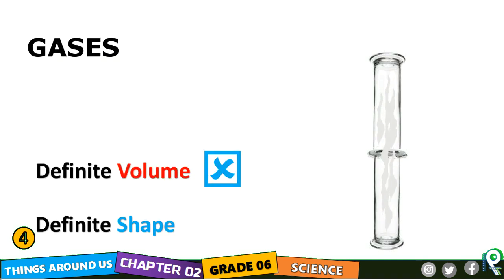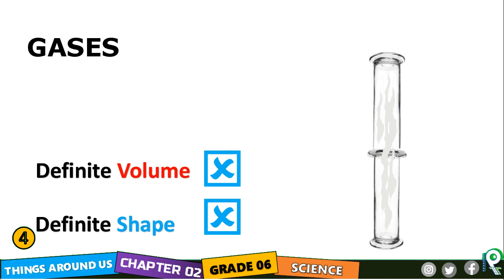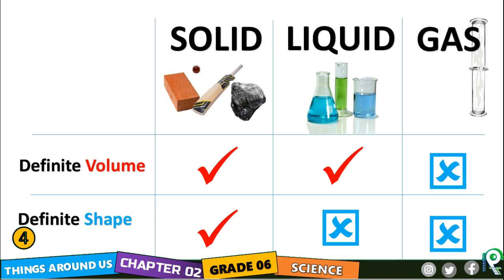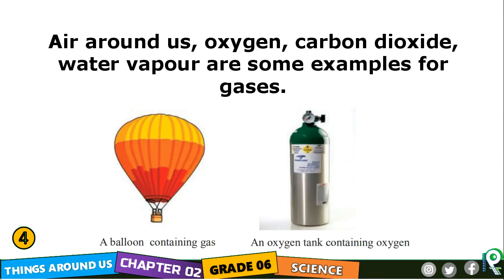The conclusion is that gases do not have a definite volume — they spread throughout the container. Therefore, gas has no definite volume and no definite shape. So to summarize: solid has definite volume and definite shape; liquid has definite volume but no definite shape; gas has no definite shape and no definite volume. Air around us, oxygen, carbon dioxide, and water vapor are some examples of gases.